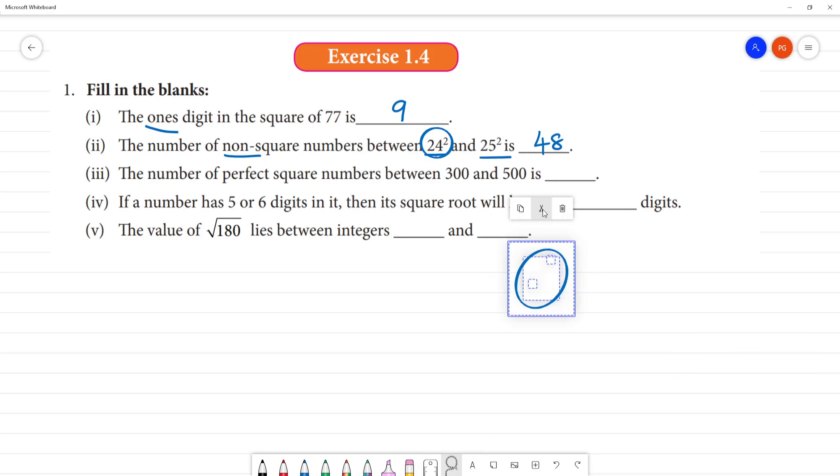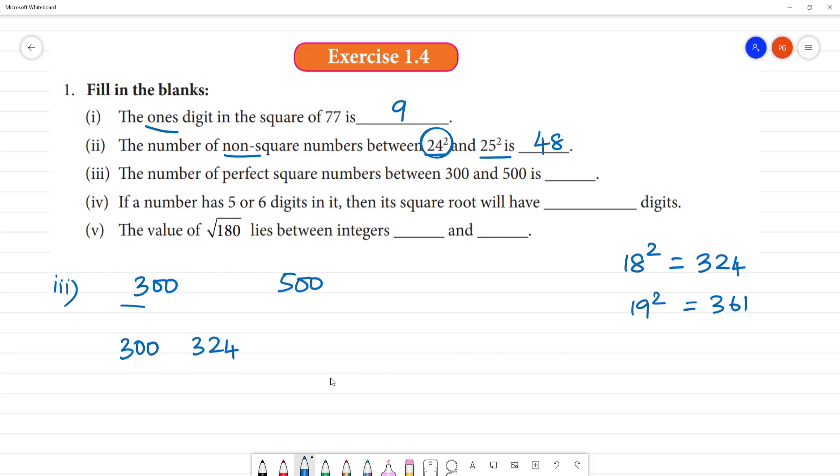Next, third one. The number of perfect square numbers between 300 and 500. So 300 to 500, what are the perfect squares?